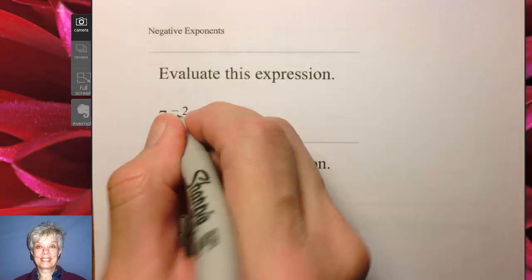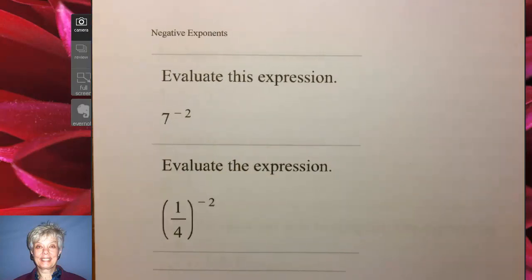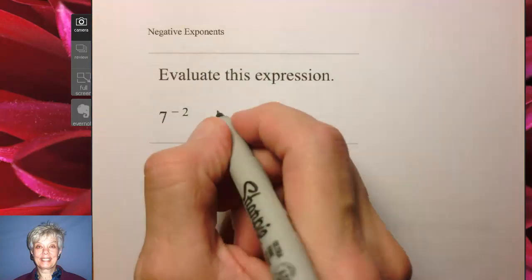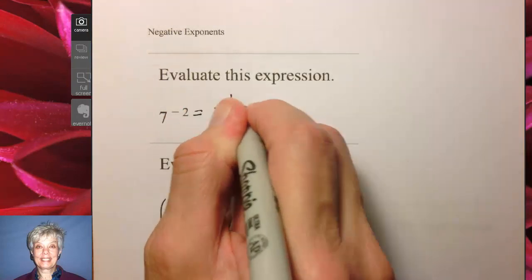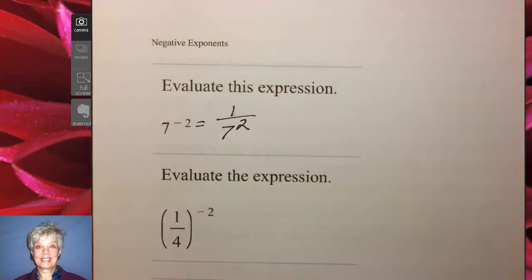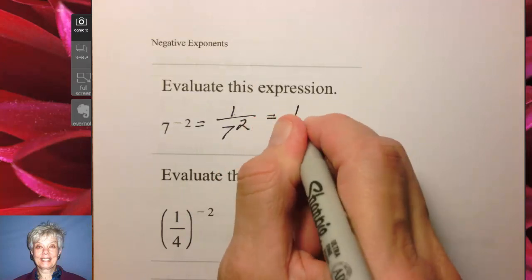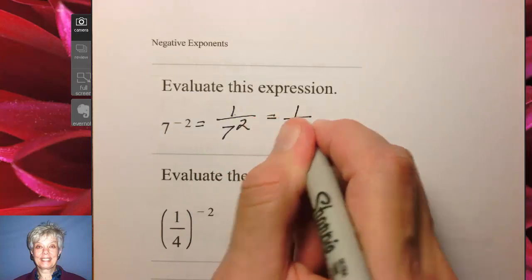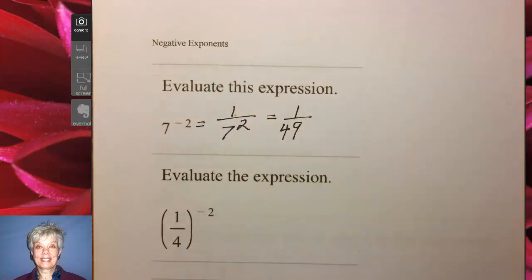This is what 7 to the negative 2 power is. It's 1 over 7 to the positive 2. And what is 7 to the positive 2? It's 49, so our answer is 1 over 49. That's what a negative exponent is.